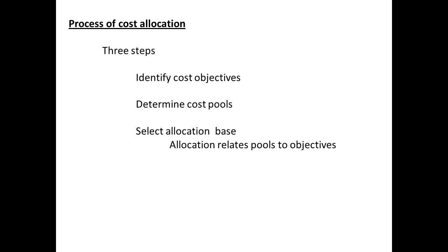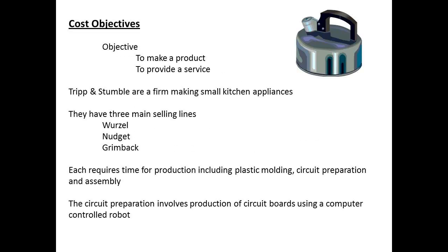The process of cost allocation is carried out in three steps. First, the cost objectives are identified. Then the cost pools are determined. And finally, the allocation base is selected to relate the cost pools to the objectives. The objectives of a business is to provide a product or a service, or both.